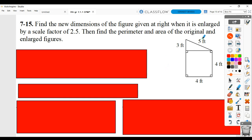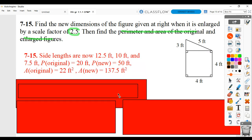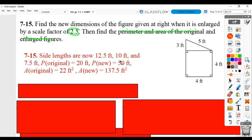For 7.15, you want to find the perimeter and area of the original and then also the enlarged figure. The enlarged figure has been multiplied by 2.5. Side lengths, once we multiply by 2.5, are 12.5, 10, and 7.5.